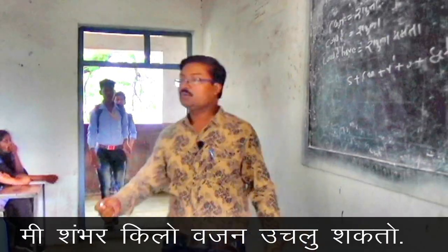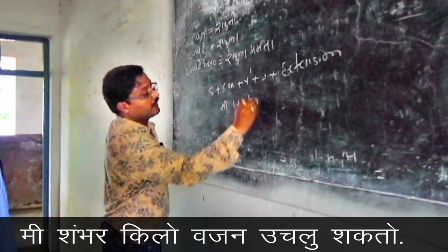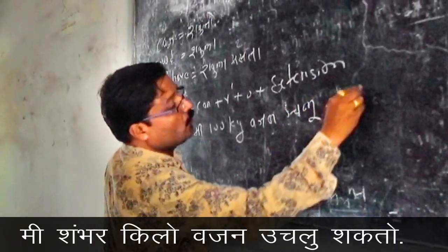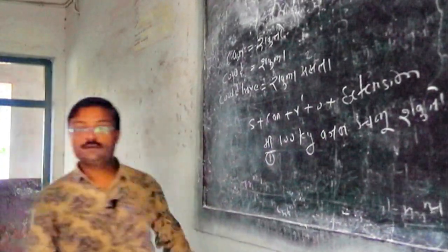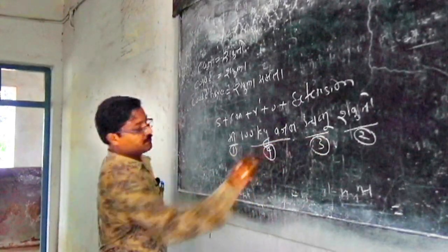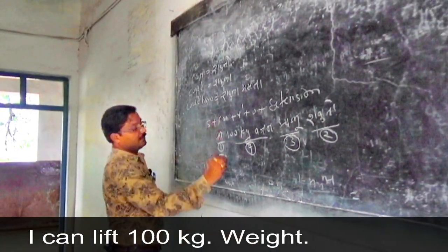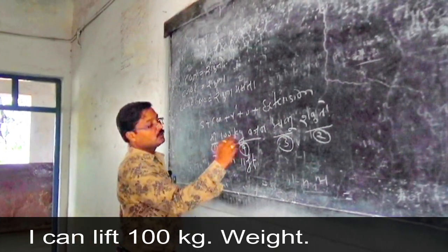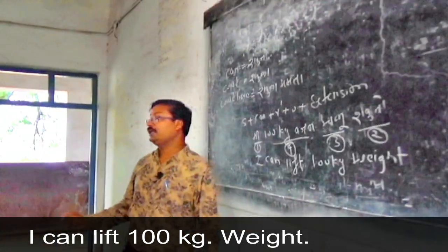For example: 'Mi shambar kilo vajan utlu shakto' — I can lift 100 kg weight. Mi means I, shakto means can, uchalne means lift, shambar kilo vajan means 100 kg weight. Give numbering from last: number 1 Mi, number 2 shakto, number 3 uchalne, number 4 shambar kilo vajan. So: I can lift 100 kg weight.